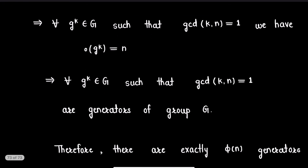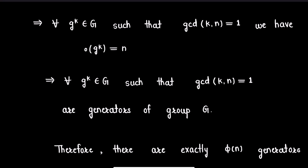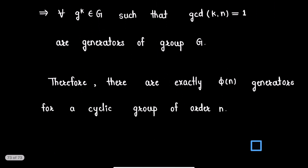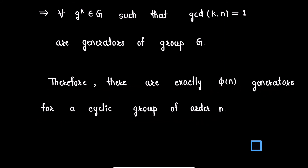From expressions (1) and (2) we have t = n. Thus we can conclude that for all elements g^k in G such that gcd(k, n) = 1, the order of g^k equals n — meaning all such elements are generators of group G. Therefore there are exactly phi(n) generators of a cyclic group of order n, by the definition of the Euler phi function. This proves our result.